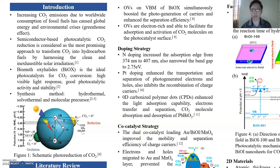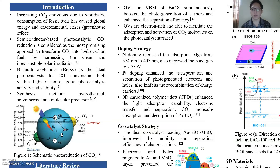In a typical photoreduction process, upon the absorption of visible light, the electrons will be excited from the valence band to the conduction band and holes are generated in the valence band. These holes will oxidize the water into oxygen and hydrogen ions. Then these hydrogen ions together with the electrons will reduce the carbon dioxide to energy fuels like carbon monoxide, methane, and so on. However, one of the drawbacks for this process is the rapid recombination of the electrons and holes, which will severely limit the efficiency of CO2 reduction.